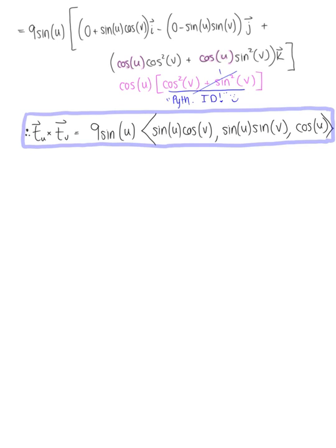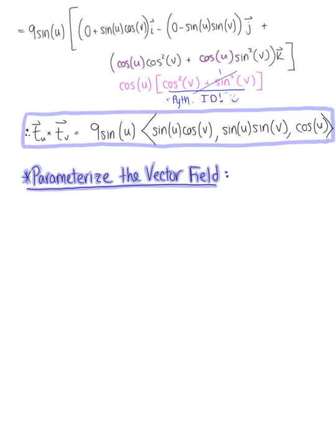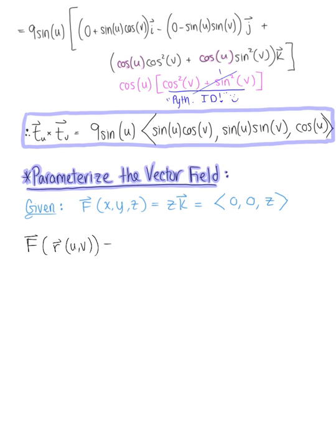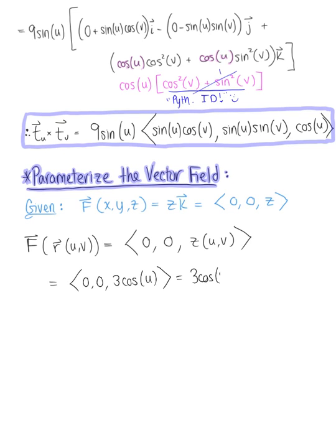Now that we have the normal vector, we parametrize the vector field. We're given F(x,y,z) = (0, 0, z). Substituting the parametric representation of the sphere, z(u,v) = 3 cos(u), so the parametrized field is F(u,v) = (0, 0, 3 cos(u)). Factoring out the scalar multiple of 3 cos(u), this becomes 3 cos(u) · (0, 0, 1).